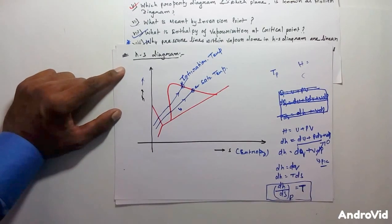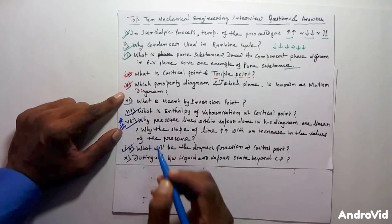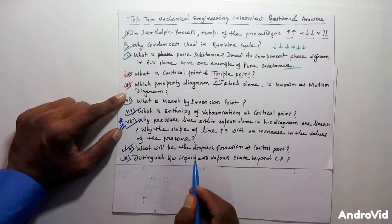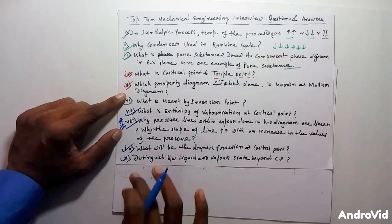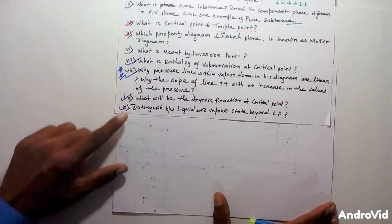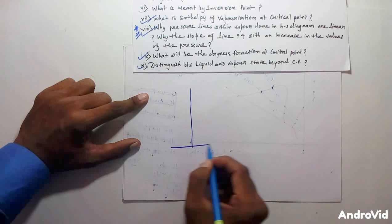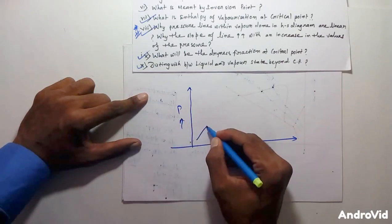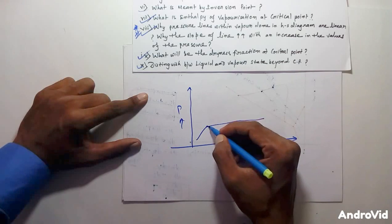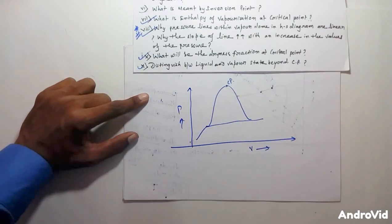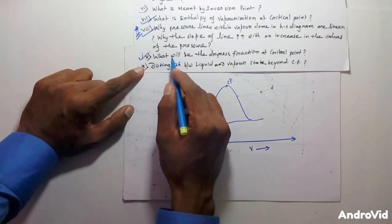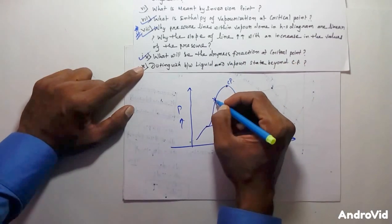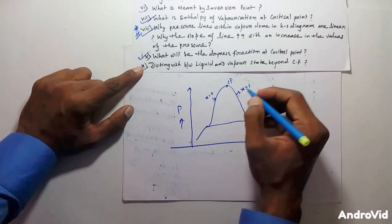Moving to question nine: what is the value of dryness fraction at the critical point? And question ten: distinguish between liquid and vapor state beyond the critical point. I am drawing a property diagram in the PV plane — pressure versus volume. This is the triple point line and this is the critical point. The saturated liquid line has dryness fraction zero and the saturated vapor line has dryness fraction one.